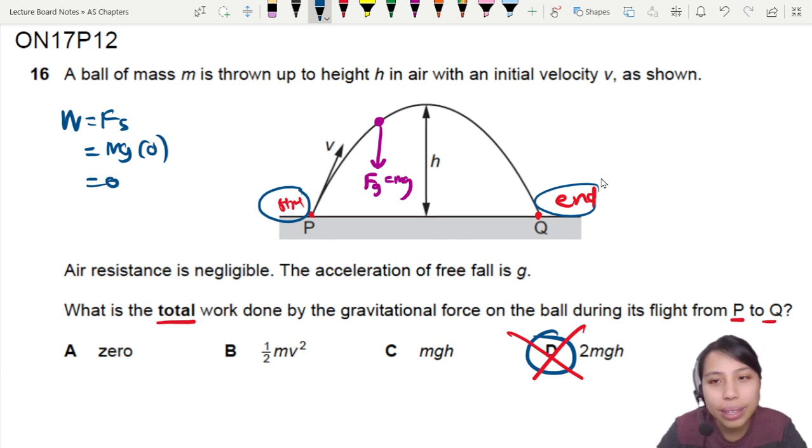What is the delta H? If you do GPE. Okay, work done is delta GPE. So MG delta H. Is there a change in height? No. So zero. So answer is zero.